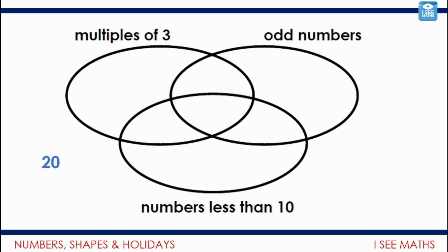Let's say 20 would be on the outside. It's more than ten, it's not a multiple of three, and it's even. Eight, well, it's less than ten, but it's not a multiple of three, and it's not odd. Seven, less than ten, it's an odd number, but it's not a multiple of three. And nine is a multiple of three, an odd number, and it's less than ten. Pause the video and think of other numbers that could go in other sections.